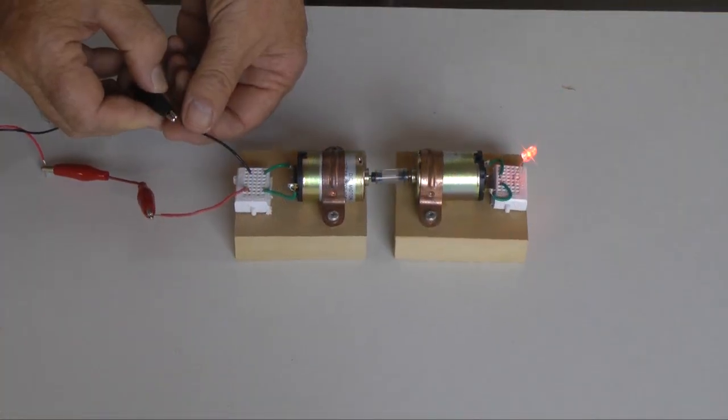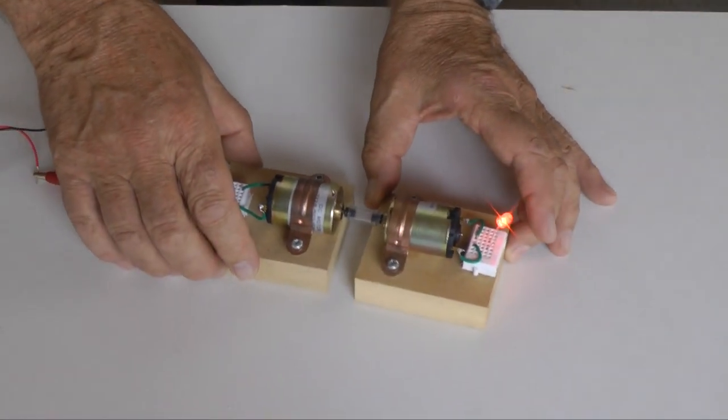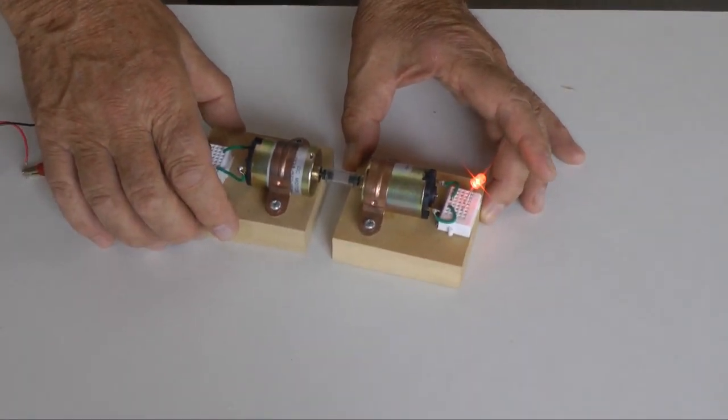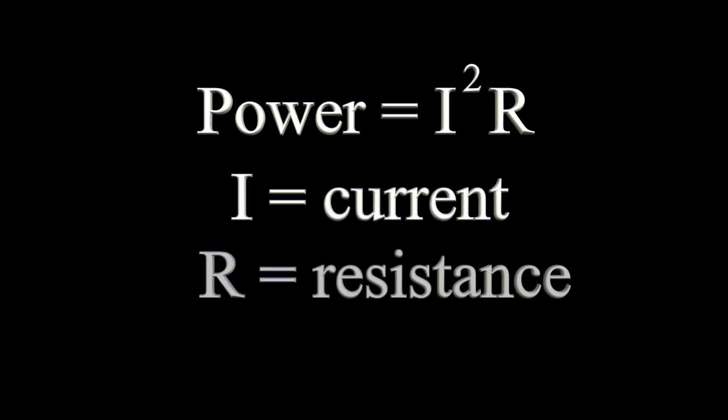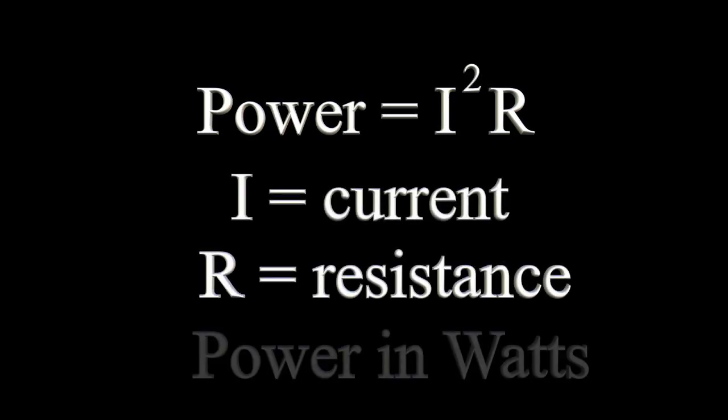Let's calculate the efficiency of this basic motor-generator pair. We can do this by calculating the power used by the motor and compare it to the power produced by the generator. Electrical power can be calculated by the formula I squared times R. That's current squared times load resistance. This produces an answer in watts.